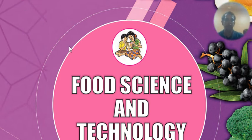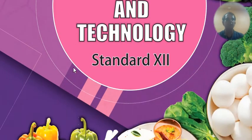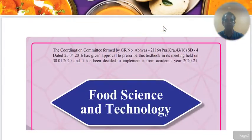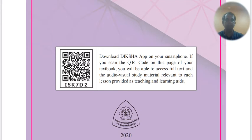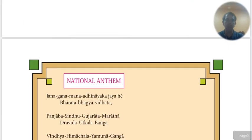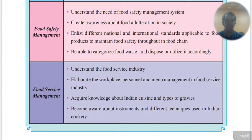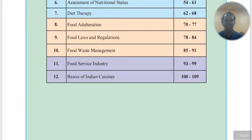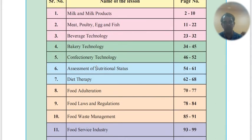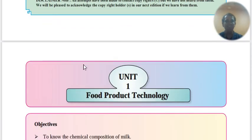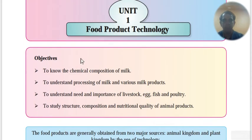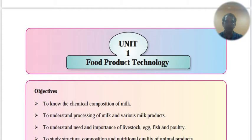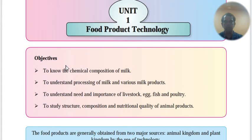Hi, food science and technology class 12 HSC Maharashtra board. I'm dietitian Vivek Shukla and I'm teaching in a very interesting way so that you get hundred out of hundred in your board exams. The course has about 109 pages and we'll talk about food laws, food wastage, food service industries, milk products, meat, beverages, bakery, confectionery — interesting and yummy things.